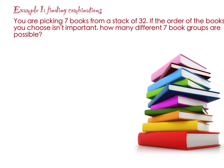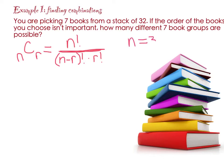Let's do an example. You are picking 7 books from a stack of 32. If the order of the books you choose is not important, how many different 7 book groups are possible? So instead of counting out, making a tree, figuring out all the different combinations we could possibly have, you can use the combination principle nCr. We have n equals 32 books and we are choosing r equals 7 of them.